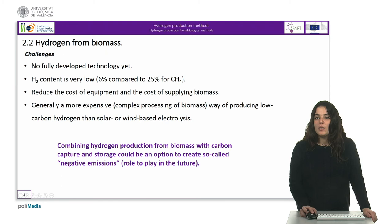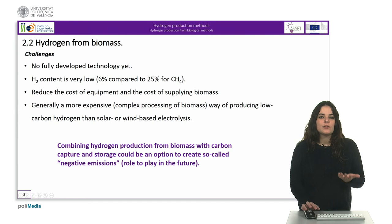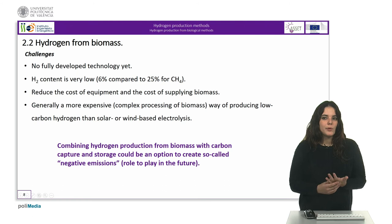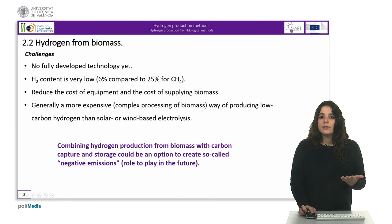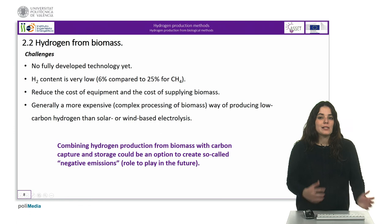Currently, there are different challenges facing hydrogen production from biomass. The first is that there is no fully developed technology yet. Although there are a number of biomass gasification demonstration plants in the world, the technology is not yet fully developed, and the problem of tar formation that may cause catalyst poisoning has not been fully resolved. In all cases, the produced gas will need further processes to extract hydrogen. Additionally, the hydrogen content of biomass is very low, leading intrinsically to low conversion efficiencies.